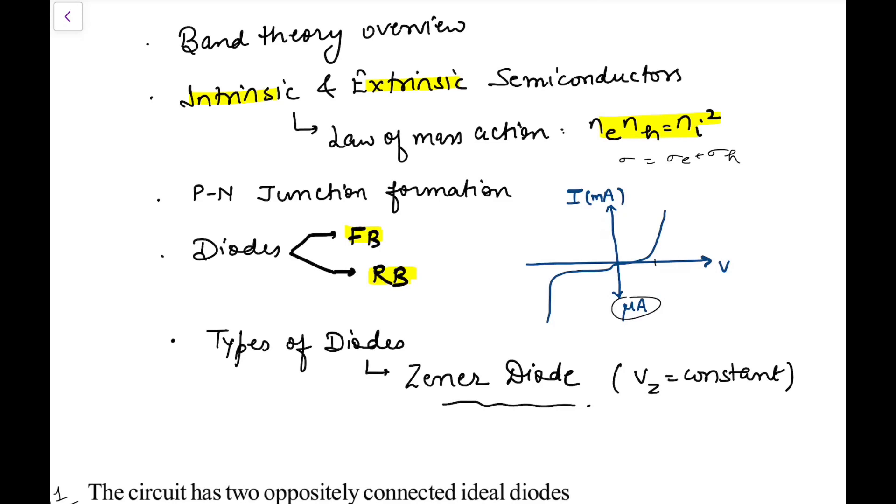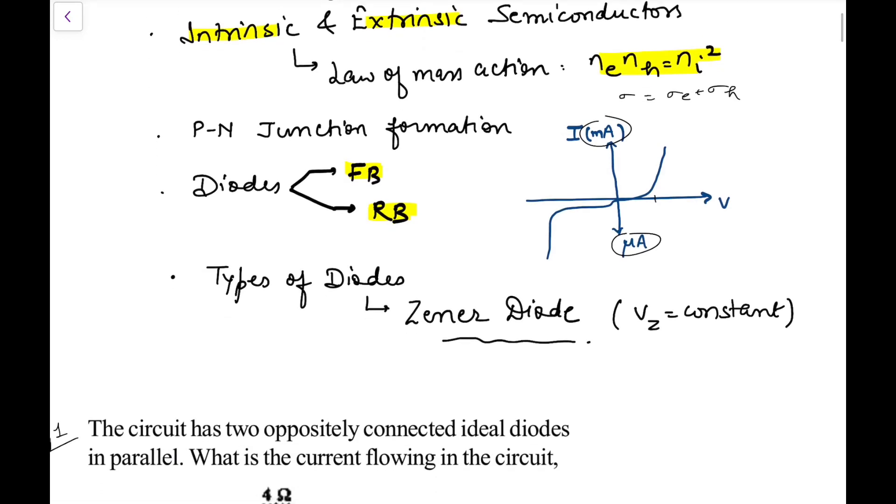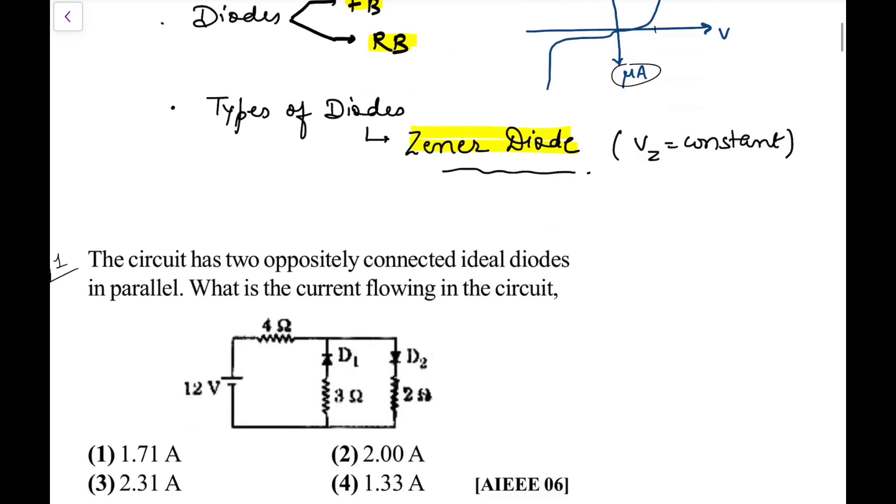Just remember this: the reverse bias current is in microamperes and this voltage is much higher. In the forward bias it is milliampere and the voltage is 0.6, 0.7, 0.8 volts order. Then you have different types of diode - the major one is the zener diode on which numericals come, otherwise you also have to get the idea of the photo diode, LED, and everything.